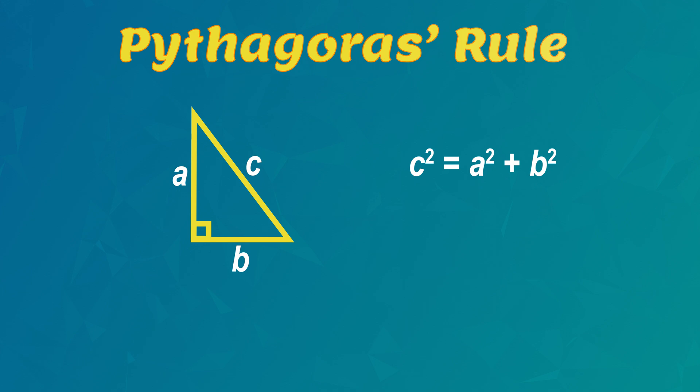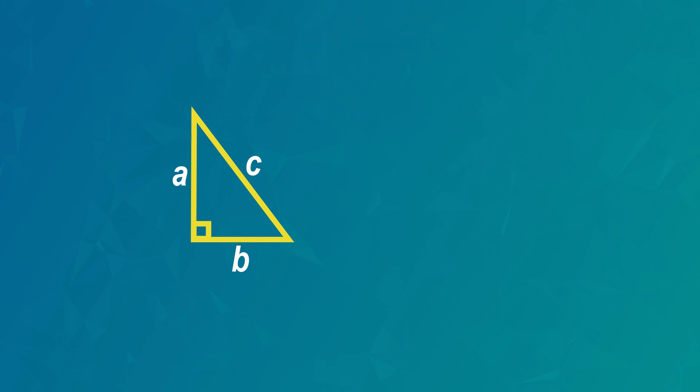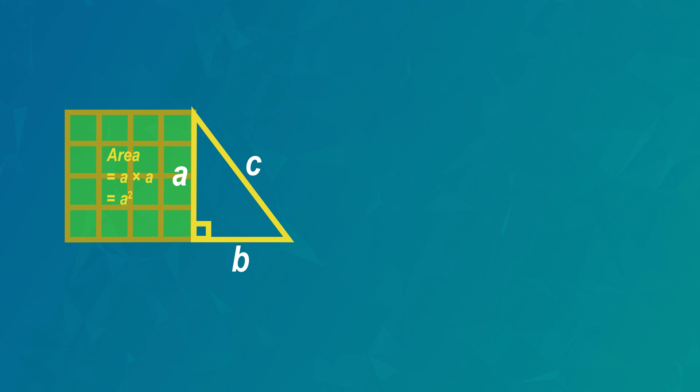Let's see the visual proof of why this works, and then we'll do many real-life examples. First, we draw a square on the side marked A. The rule for the area of a square is side multiplied by side. So that's A multiplied by A, or A squared.